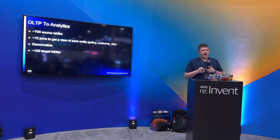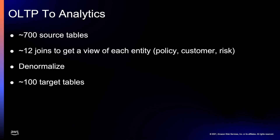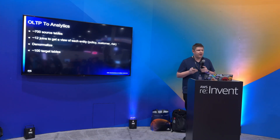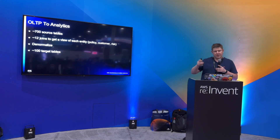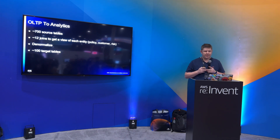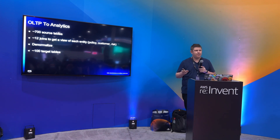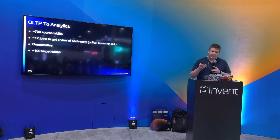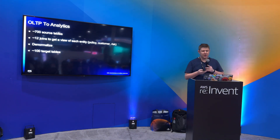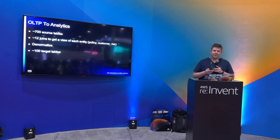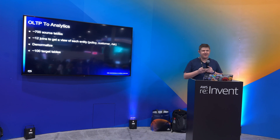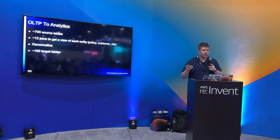We've got a business application that sells insurance policies. The solution has about 700 database tables, and those tables have been optimized for online transaction processing. In order to do the analytics, we denormalize the data to make that model a lot simpler to work with — going from 700 tables down to 100 views and tables optimized for analytical workloads. The OLTP model was replicated and accessed directly, and there are generally about 12 table joins to get the information needed for entities such as the insurance policy customer or risk. Those joins can be expensive.